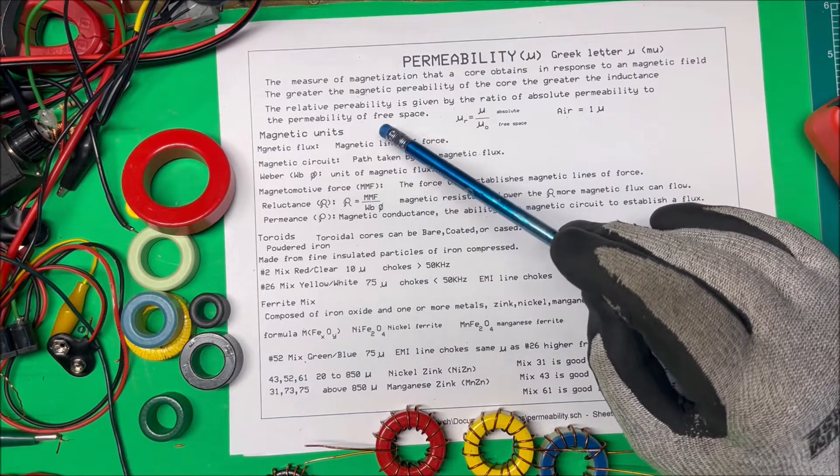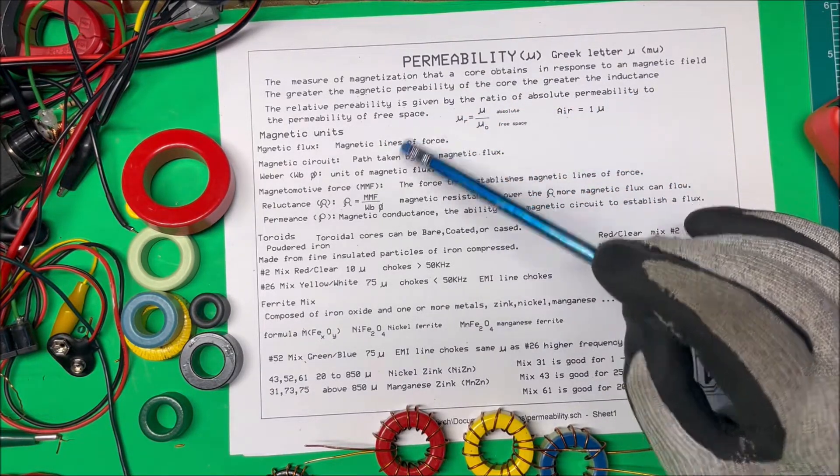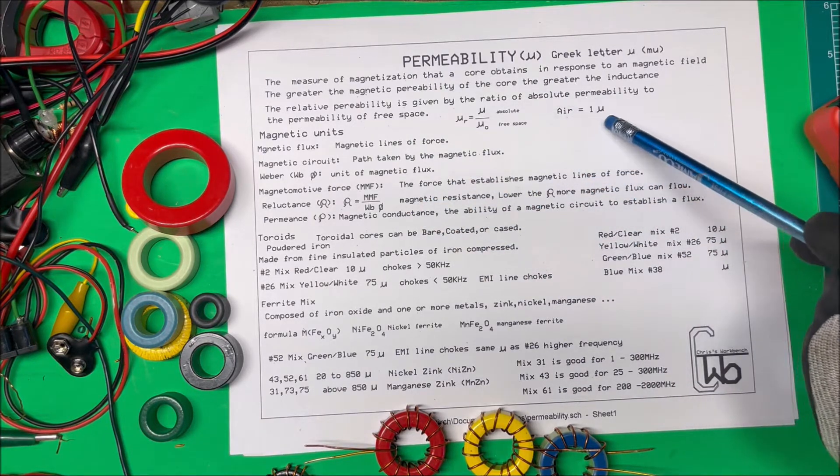The relative permeability is given by the ratio of absolute permeability to the permeability of free space. And for air, the permeability is one.